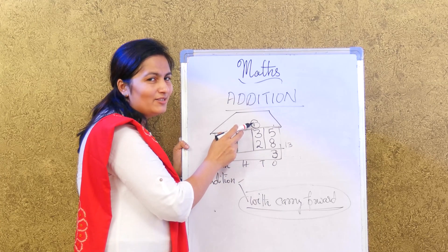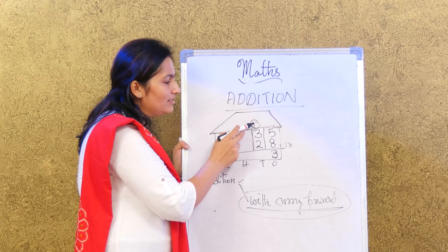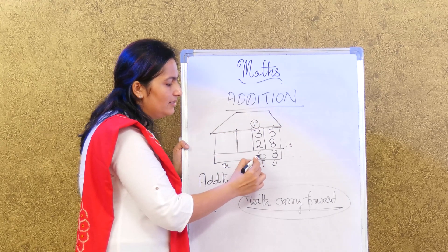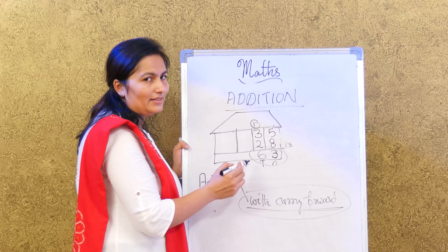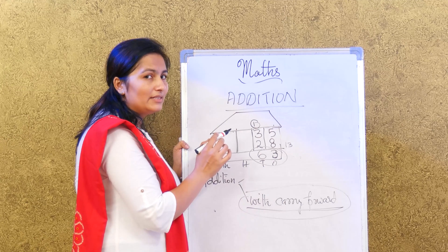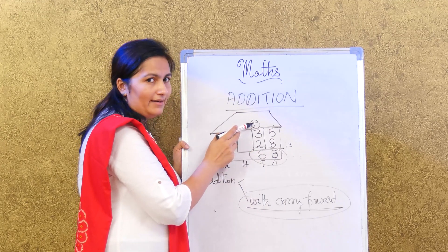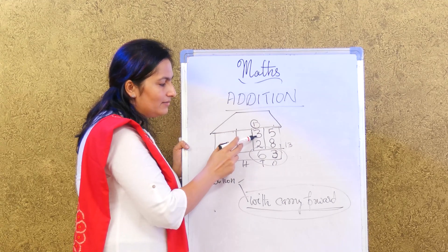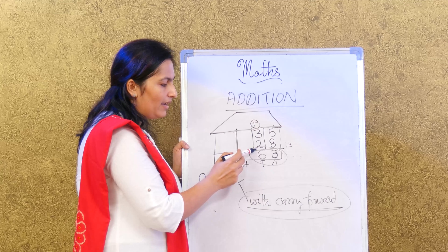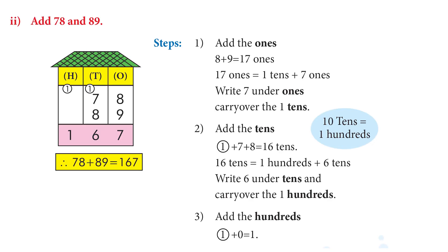Then we continue to add as normal: 3 plus 2 is 5. Now remember, there is a 1 sitting on top, so you add that 1 also and you get the answer 6. So the score of Mr. Rahul Dravid is 63. We carried forward 1, then added it: 3 plus 2 is 5, plus 1 gives us 6. If you get a carry, pass it on to the next column — simple as that.